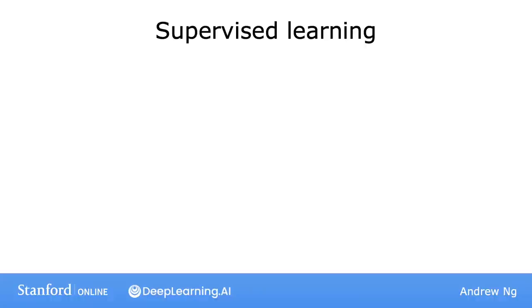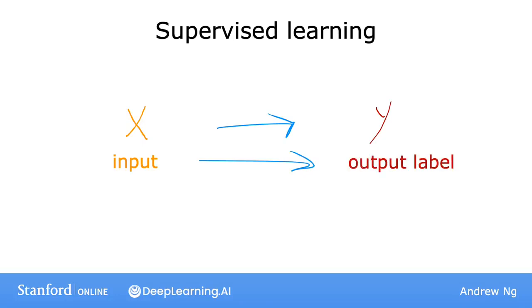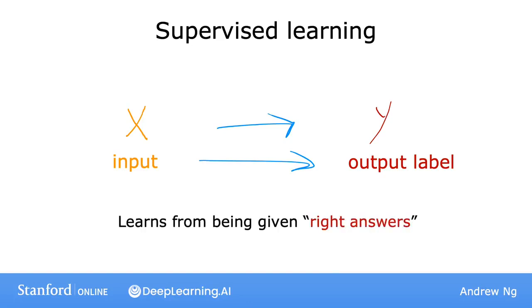Let's take a look at what that means. Supervised machine learning, or more commonly supervised learning, refers to algorithms that learn x to y, or input to output mappings. The key characteristic of supervised learning is that you give your learning algorithm examples to learn from that include the right answers, where by right answer I mean the correct label y for a given input x. And it's by seeing correct pairs of input x and desired output label y that the learning algorithm eventually learns to take just the input alone, without the output label, and gives a reasonably accurate prediction, or guess, of the output.